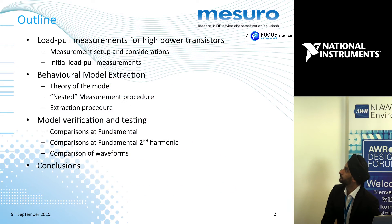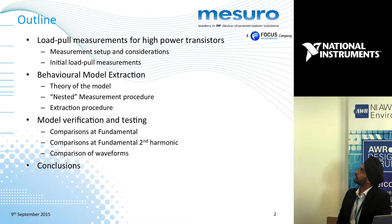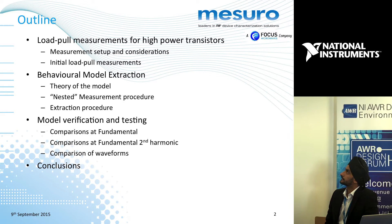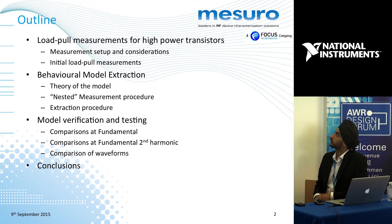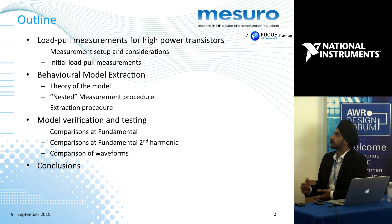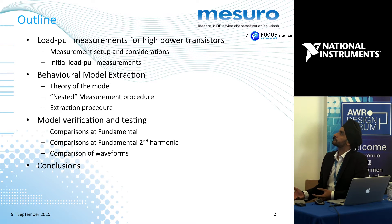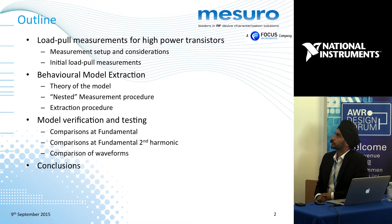To start with, I will cover the topic of how we did the measurements for the high-power transistor that we were asked to do. It was a 250-watt GaN device. We look at the measurement setup considerations, did some initial load pull measurements, and how we used that information to center the grid for our behavioral model extraction. We will then go through a very brief theory of the model.